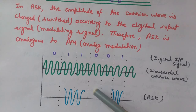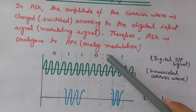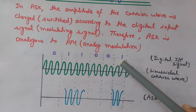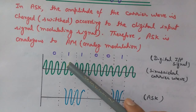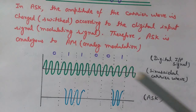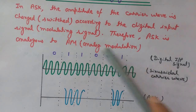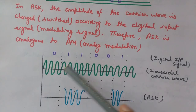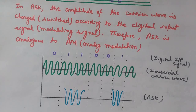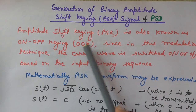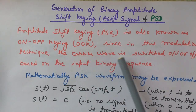When the input becomes 0 again, no transmission is done — the carrier wave is not passed. Where the input is 1, we transmit the continuous carrier wave. At places where it is 0, no transmission is done, and where it is 1 we transmit this continuous analog carrier wave. This is amplitude shift keying — it is also known as on-off keying, since the carrier wave is switched on or off based on the input binary sequence.